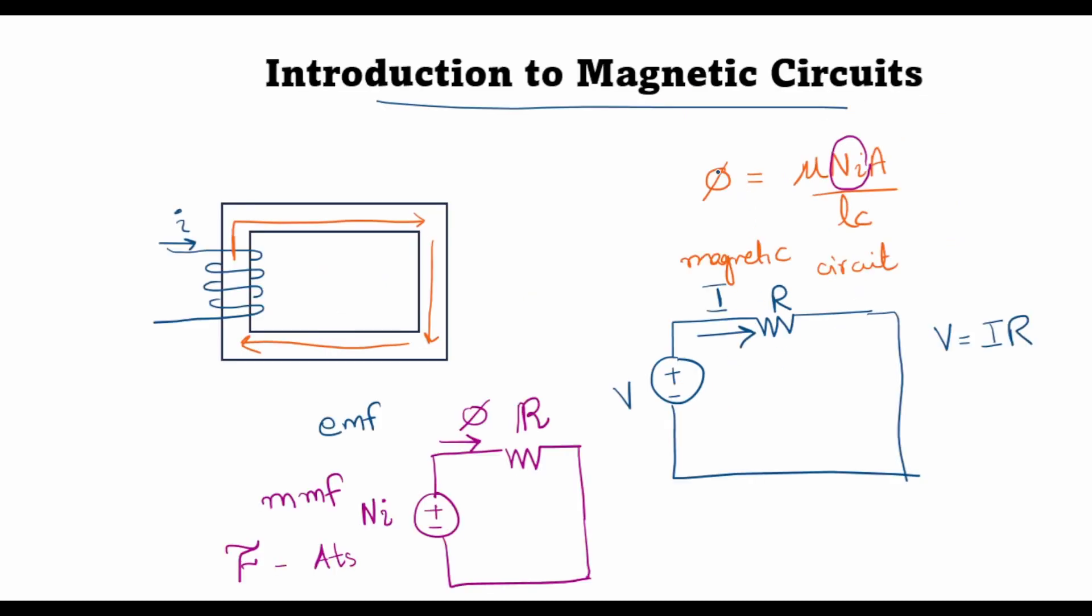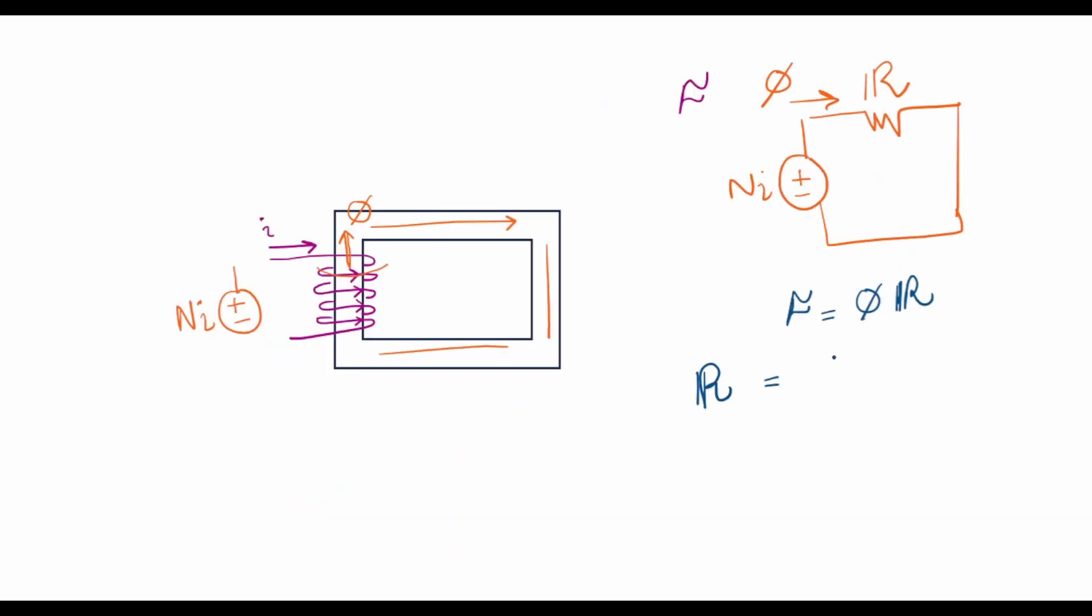Now reluctance is given from the same expression. So if flux is the equivalent of current and the equivalent of voltage, then whatever is here with NI will be the equivalent of 1 over R. Thus the reluctance can be written as Lc over μ times A.